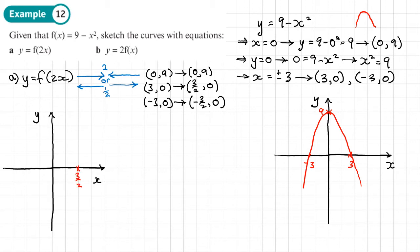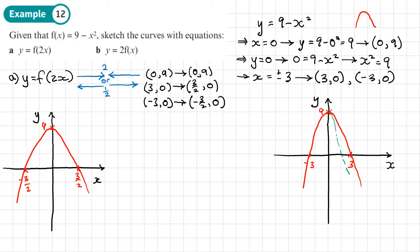Marking those new coordinates — 3/2, −3/2, and 9 — and drawing the quadratic through them gives the sketched curve for part A. If I were to draw it on the same scale as the original, you'd see it's been squashed horizontally, but it looks similar here because I'm using a different scale.